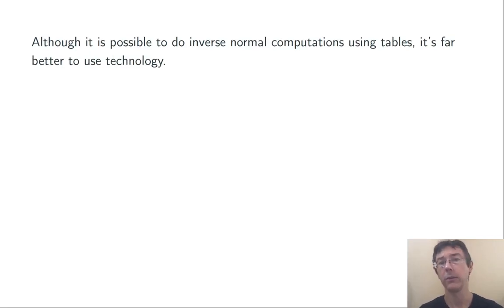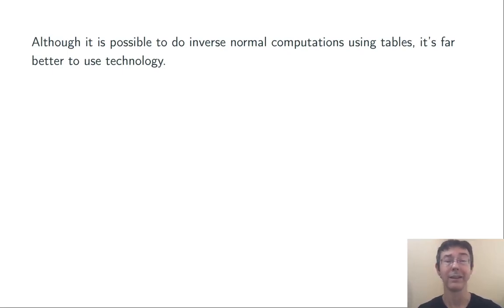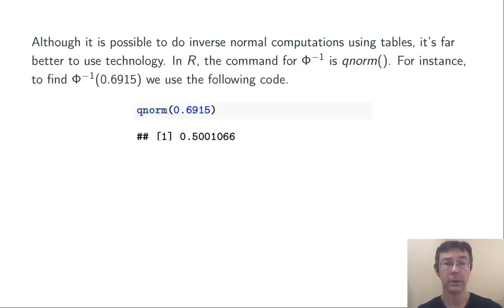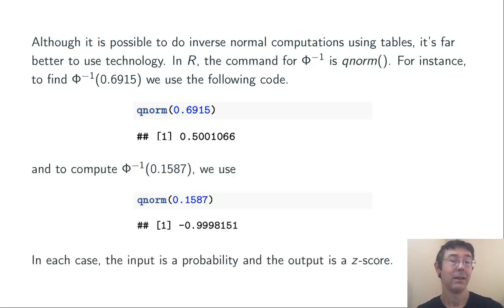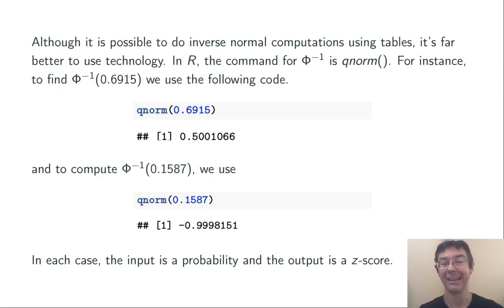It is possible to do inverse normal calculations using tables, and statistics textbooks will sometimes encourage you to do it that way, but that's pretty old school. In the 21st century, we should be doing these using technology. In R, the command for the inverse normal is qnorm. So if we want to compute phi inverse of 0.6915, we input qnorm(0.6915) and get out 0.5001066 — about 0.5. For phi inverse of 0.1587, it's qnorm(0.1587), and we get about negative 1.